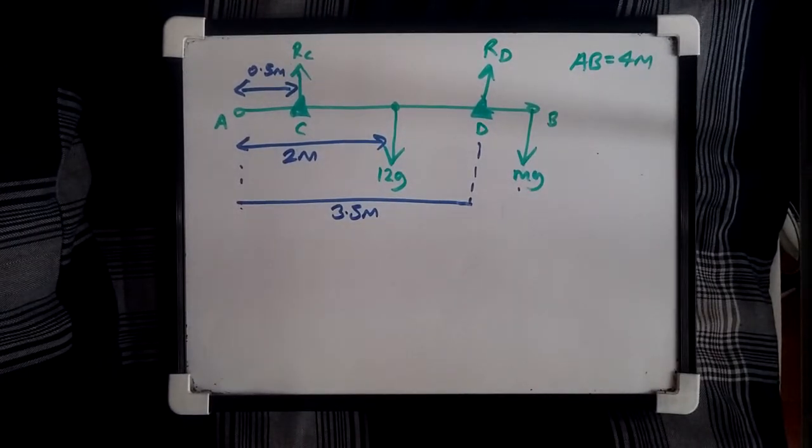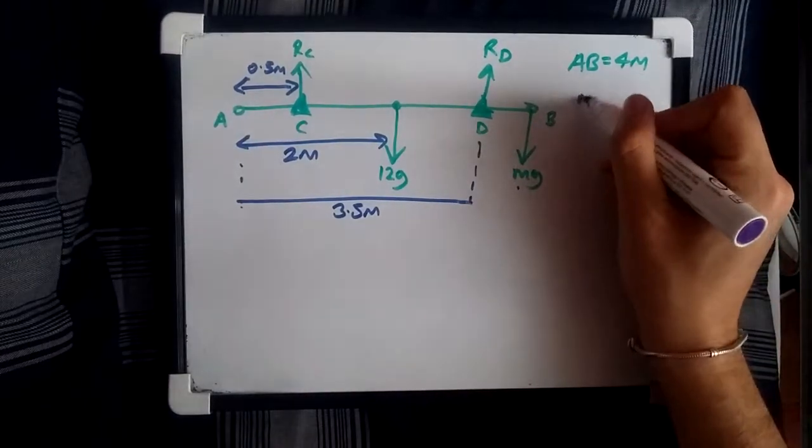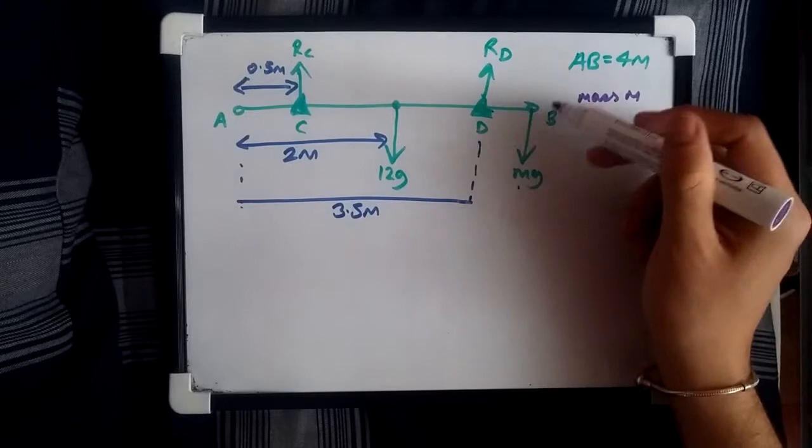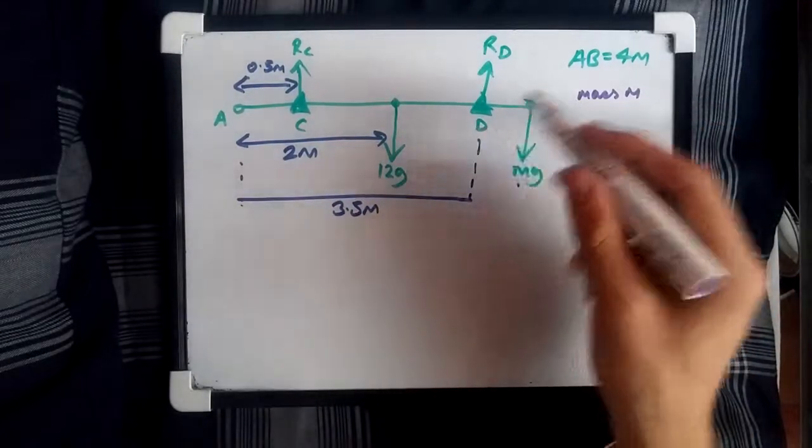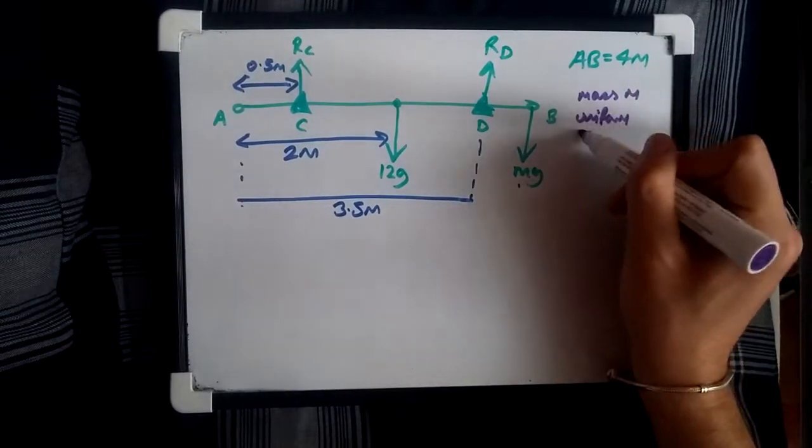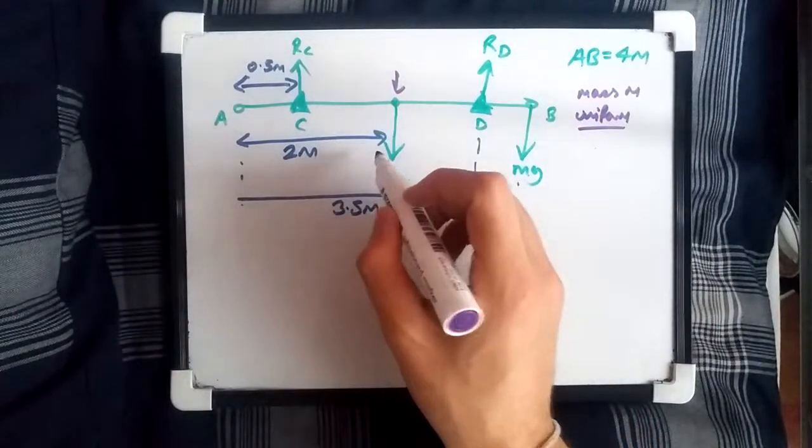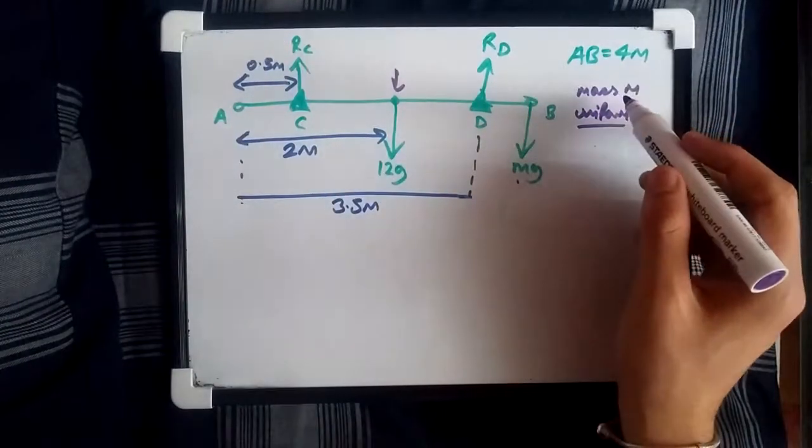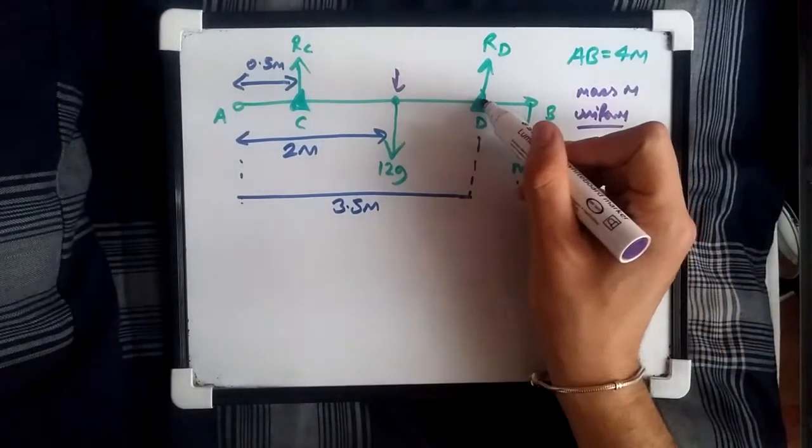And in this uniform rod, the question tells us to calculate, find the value of the mass M, which is located at the point B, hanging off point B. We also know that this rod is uniform. So in other words, the centre of mass will always be bang in the middle, at distance 2 meters. The rod itself is 4 meters long. And what we need to know, and what we also know is that the rod is at the point of turning about D.